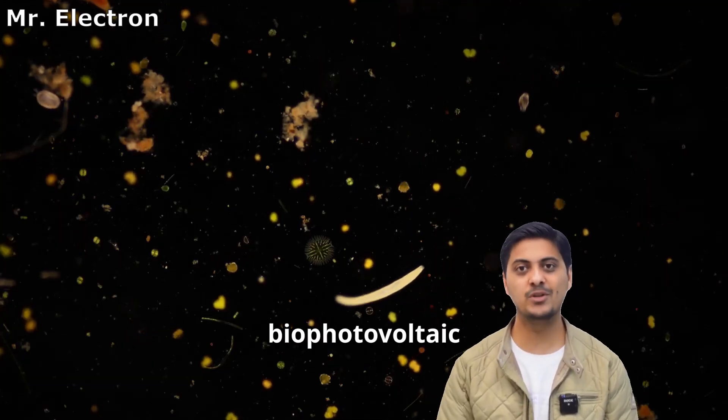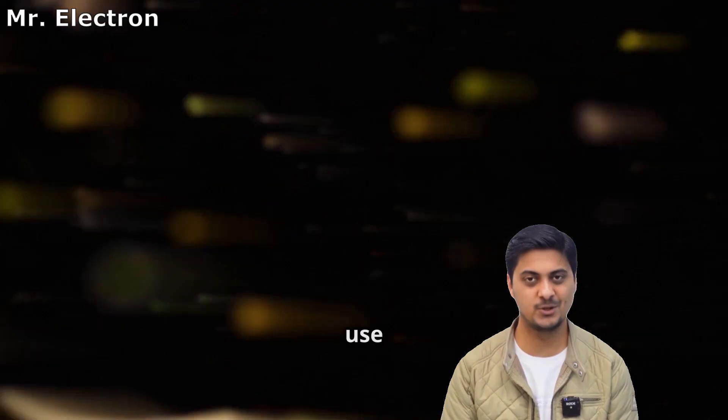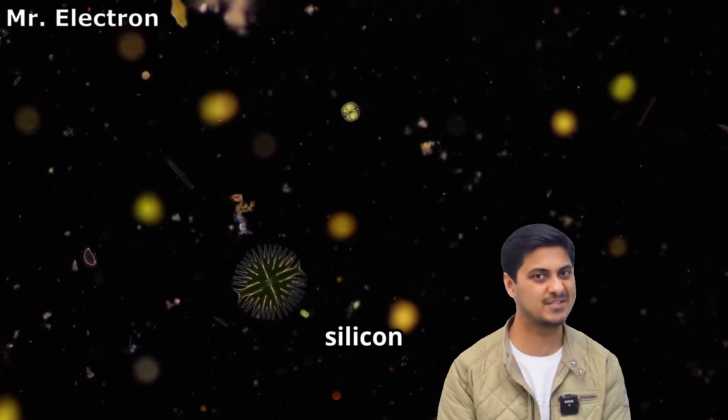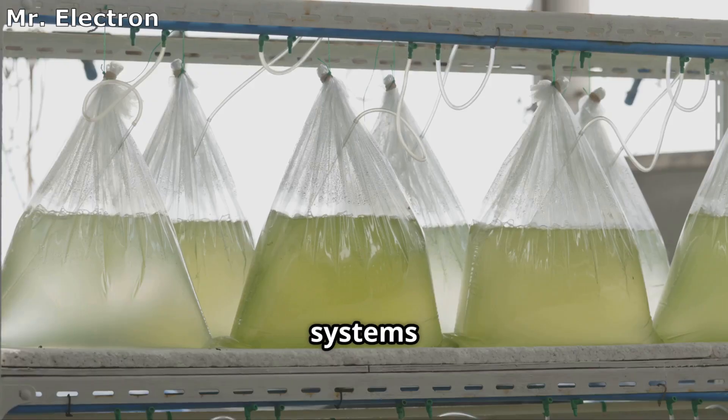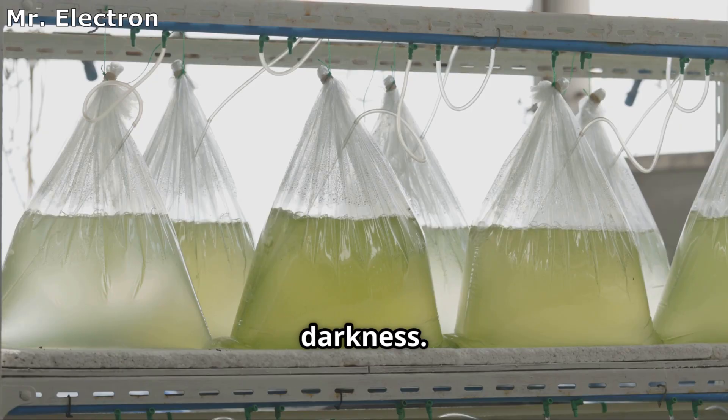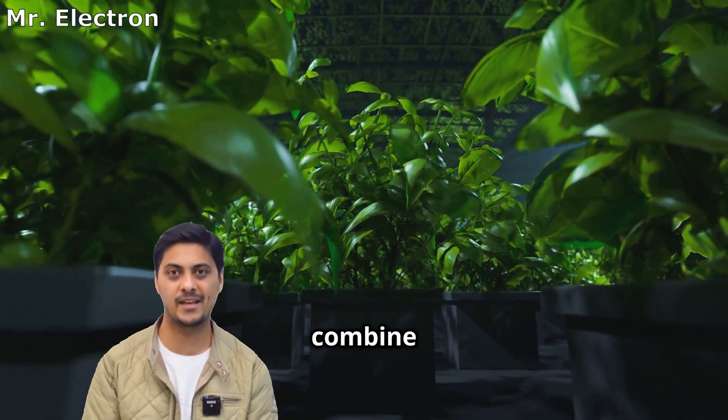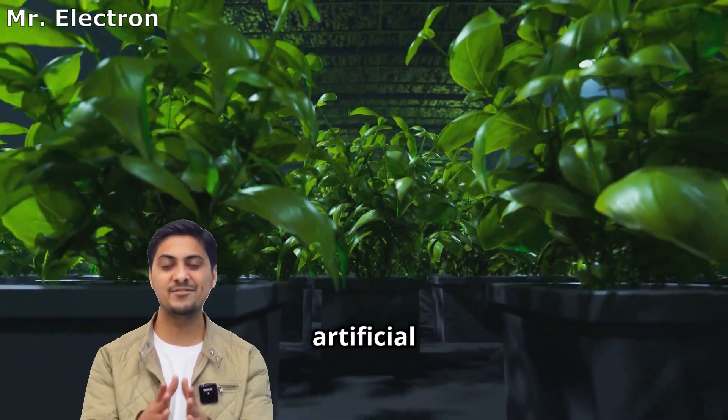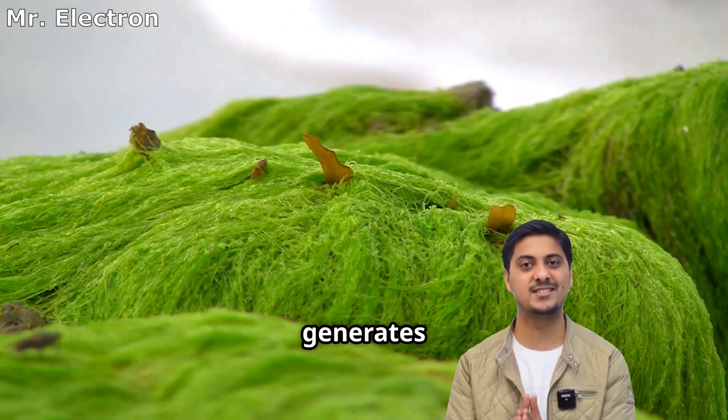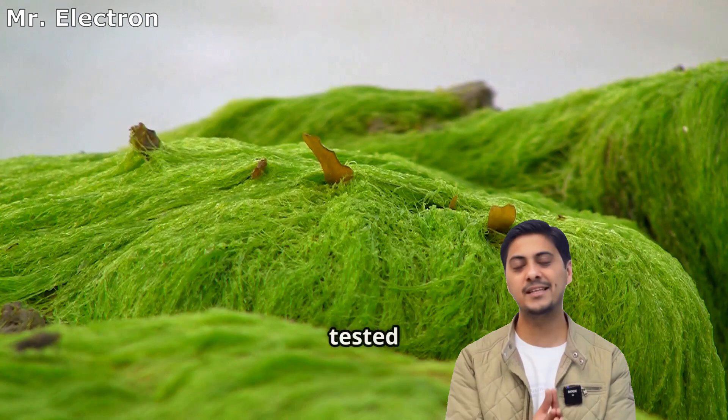Algae bio-photovoltaic panels use microscopic plants instead of traditional silicon solar cells. These algae systems continue generating small amounts of power even in complete darkness. Hybrid systems combine real plant leaves with artificial components for maximum power output. Moss generates the highest voltage among commonly tested plants.